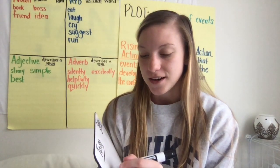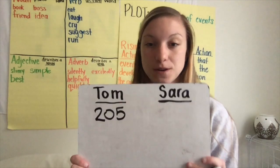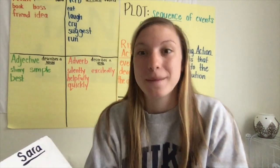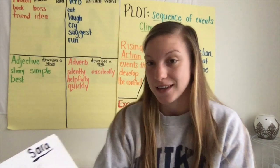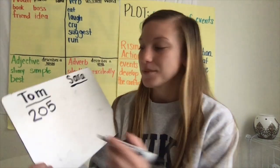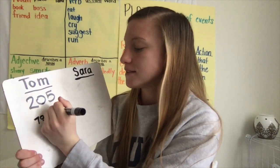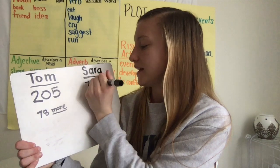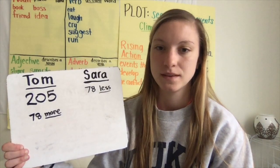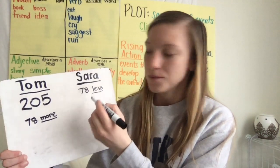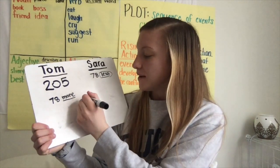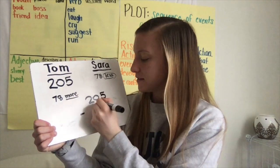I know for sure that Tom collected 205 cans of food. Sarah, on the other hand — we don't know how many she collected. We know she collected 78 less cans than Tom, but we don't know the exact number. It says Tom collected 78 more cans than Sarah. Well, if Tom has more, then Sarah has to have 78 less cans than Tom. So in order to find out how many cans Sarah collected, we need to figure out a number that is 78 less than 205. When I'm looking for a number that's less, the operation I'm going to use is subtraction.